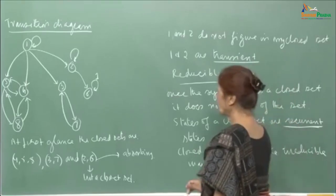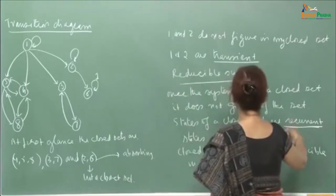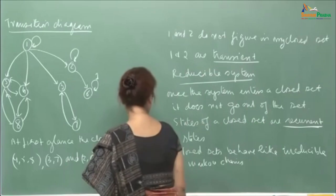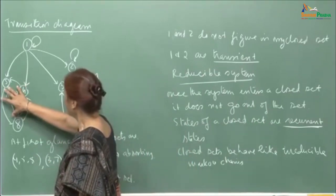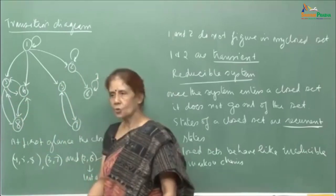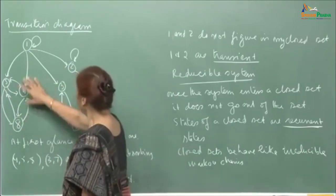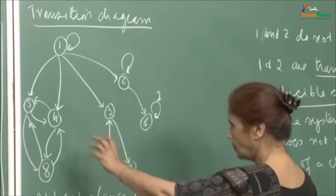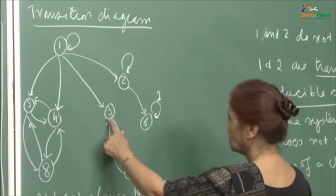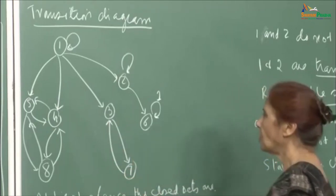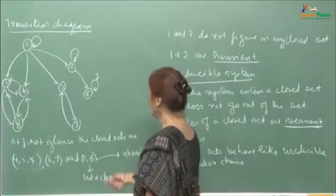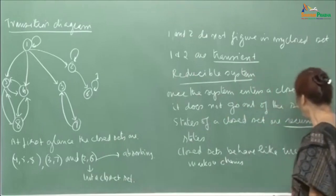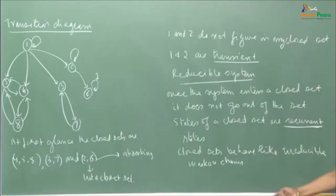After defining recurrent, transient, and absorbing states, note that each closed set itself behaves like a sub-chain of the whole system that is irreducible — an ergodic sub-chain. For example, the chain consisting of states 3 and 7 together forms an irreducible chain where both states communicate with each other. Further classification is still needed.